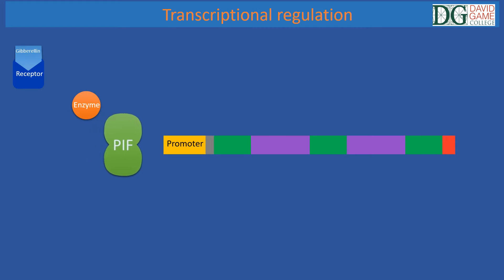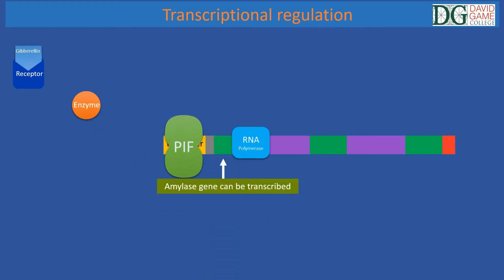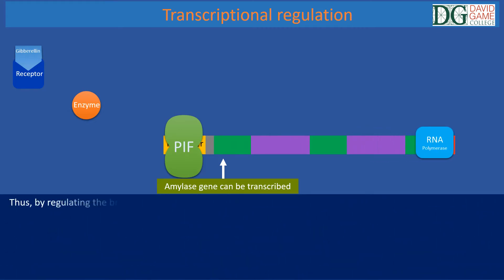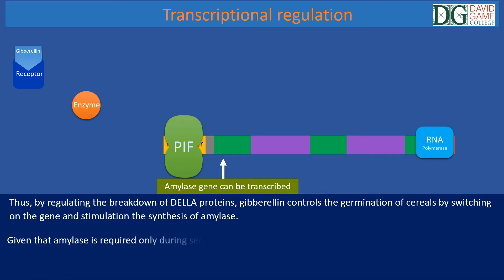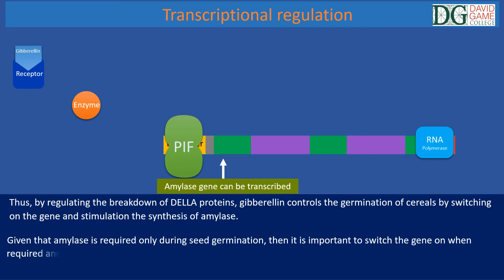Now, PIF is free to bind to the promoter region, which allows the amylase gene to be transcribed. Thus, by regulating the breakdown of Della proteins, gibberellin controls the germination of cereal plants by switching the gene on and stimulating the synthesis of amylase. Given that amylase is only required during seed germination, it is important to switch the gene on when required and switch it off when not.